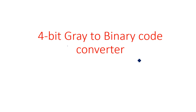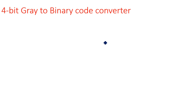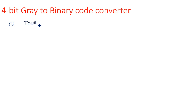In this video I am going to explain 4-bit gray code to binary code conversion. In the previous video I gave the explanation of the reverse — binary code to gray code converter. For any conversion or any logic circuit design, our first step is to draw the truth table. So here also, in order to convert gray code to binary code, we have to draw the truth table between the gray code and binary code.